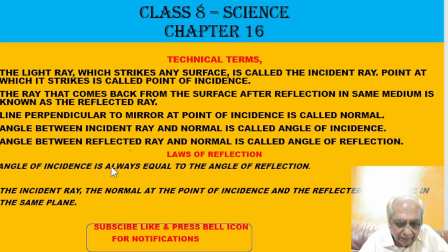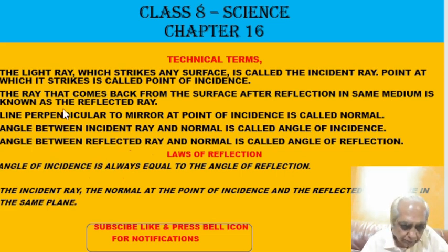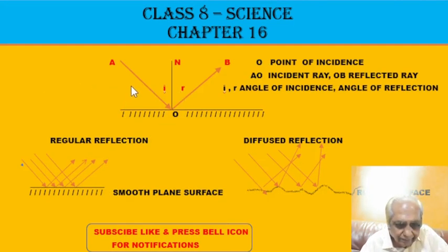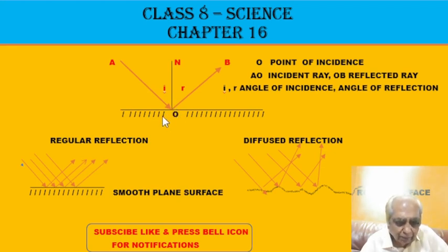Now we will do an experiment to verify this. You take a comb, cover it with black paper leaving only a small opening in the middle, and allow light from a torch to pass through. This gives a thin ray of light — alternatively, you can make a pinhole in paper and shine a torch through it to get a ray of light. The incident ray, reflected ray, and normal are all in the same plane.